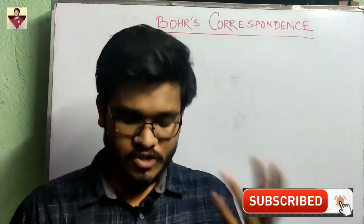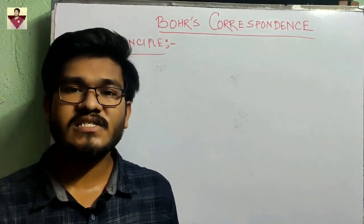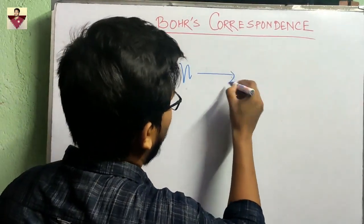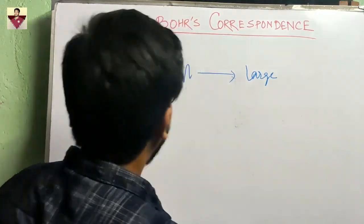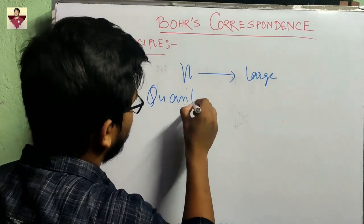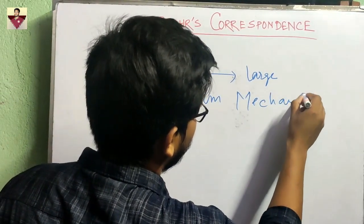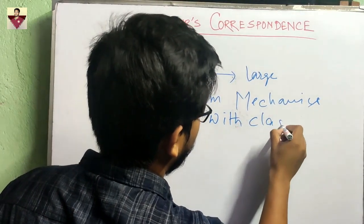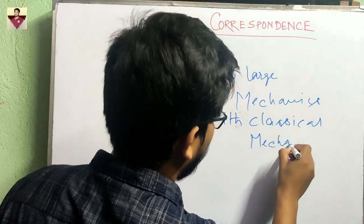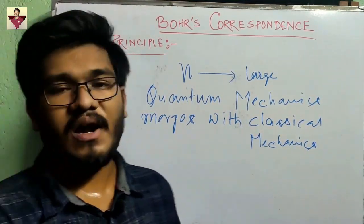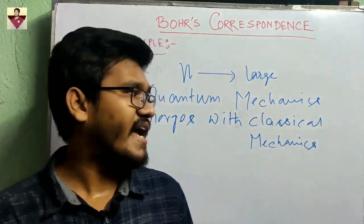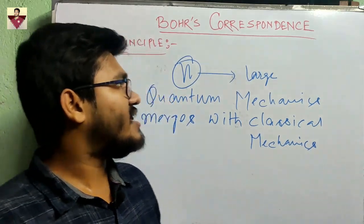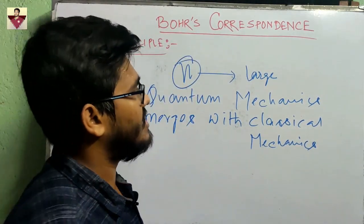So without wasting much time, let's jump into the video. Bohr's correspondence principle states that when a system is in a high excited state — that means when the principal quantum number n is very large — then quantum mechanics merges with classical mechanics. So the calculation from quantum mechanics will give you the same result as that of classical mechanics for a very large value of the principal quantum number n.